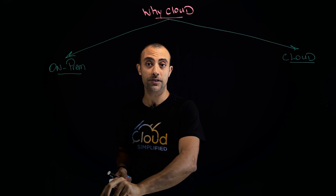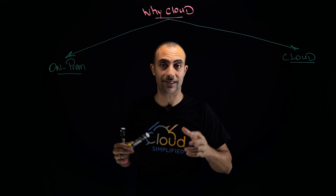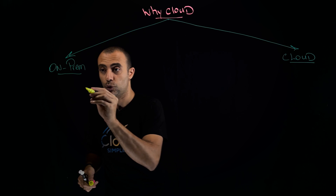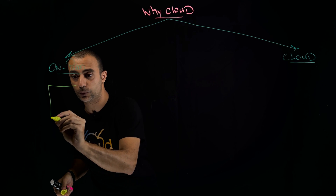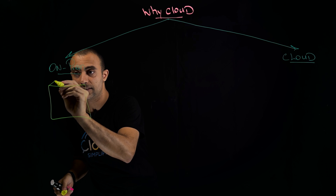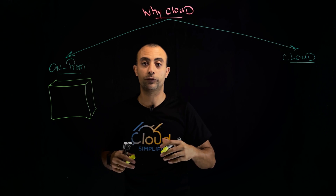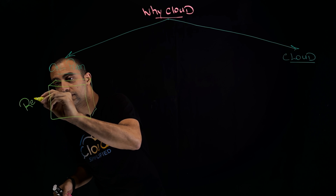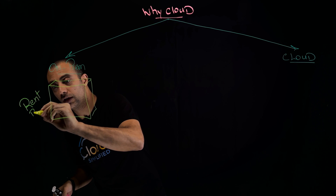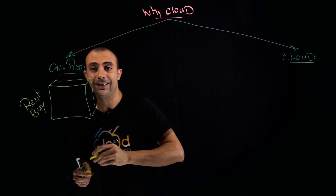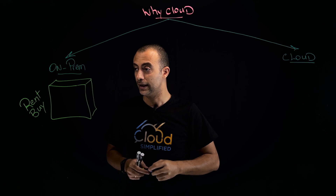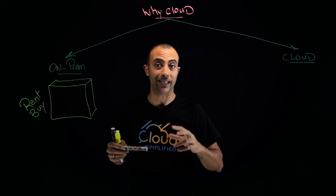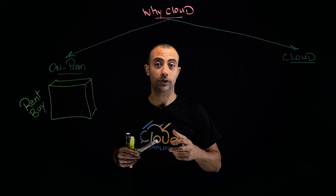If this organization wants to deploy on-premise, the first thing they need is a physical location — a data center. To have this data center, they either need to rent it or buy this physical space. That's number one, and then number two comes something very crucial: sizing.